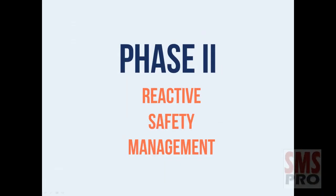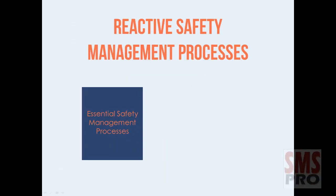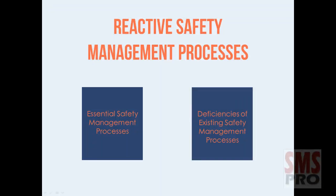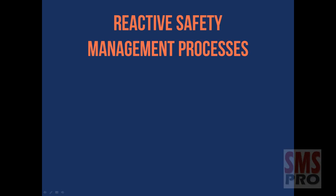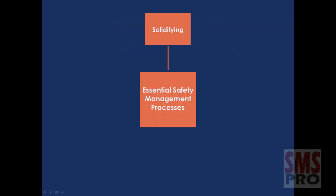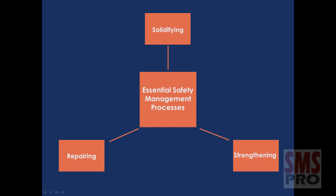Phase 2 tasks implement essential safety management processes. Deficiencies of existing safety management processes discovered during the gap analysis from Phase 1 will also be focused on. ICAO's Phase 2 focuses on solidifying, repairing, and strengthening existing safety processes and developing those which do not yet exist. During this phase, aviation service providers are not yet analyzing data to detect future events — therefore, Phase 2 is known as the reactive phase.